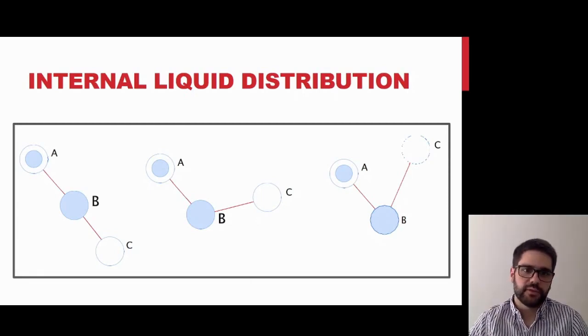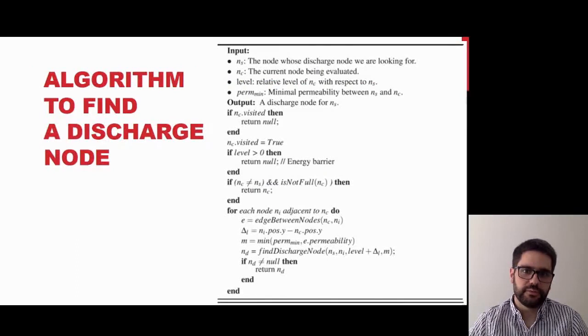This is the algorithm that updates the internal distribution. In a few words, the algorithm searches for each node a particular one called discharge node, which is a node capable of receiving liquid from the first one. Then the algorithm computes the volume of liquid that would travel between these two nodes. This operation takes into account the difference of potential energy and the permeability of the interconnecting edges.